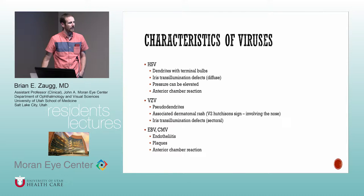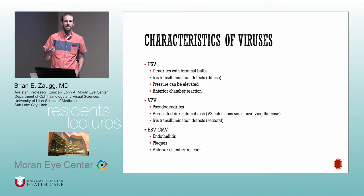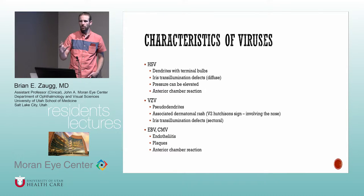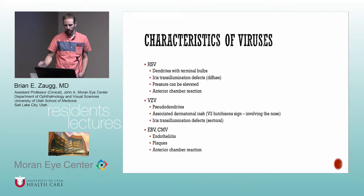EBV and CMV typically present with endotheliitis. You'll see Descemet's folds and often a plaque or round area of affected endothelium with overlying corneal edema. An anterior chamber reaction can occur with pretty much any of these viruses, so any of them can present with iritis.